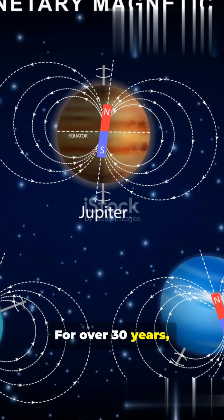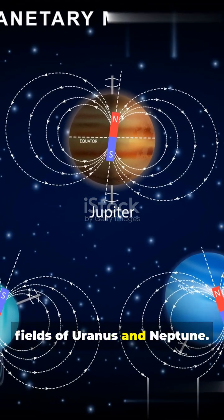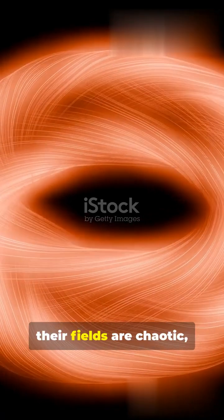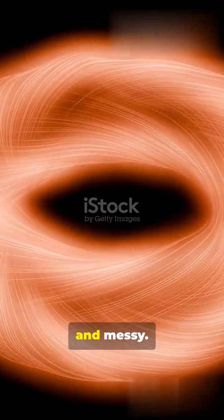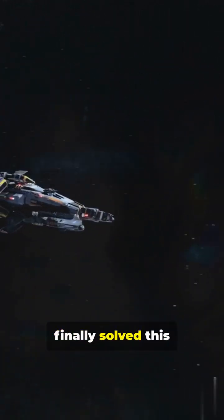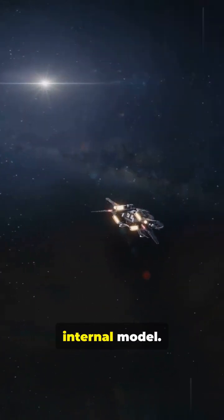For over 30 years, we've puzzled over the bizarre magnetic fields of Uranus and Neptune. Unlike Earth or Jupiter, their fields are chaotic, tilted and messy. Now, new computer simulations have finally solved this decades-long mystery with a radical internal model.